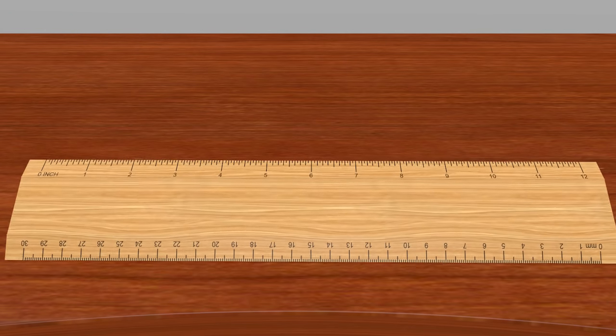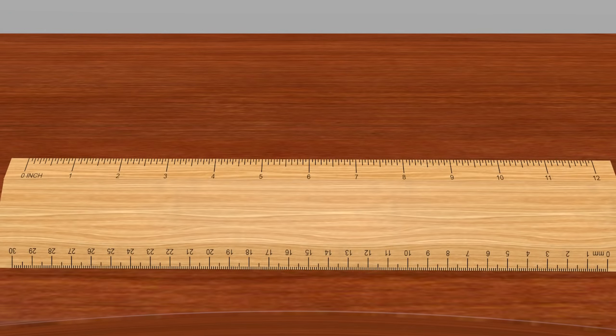We are going to get our data by measuring the lengths of some objects that I have. We will then write the data we collect on a piece of paper and use that data to make a line plot. My friend Speedy will bring us some objects to measure.